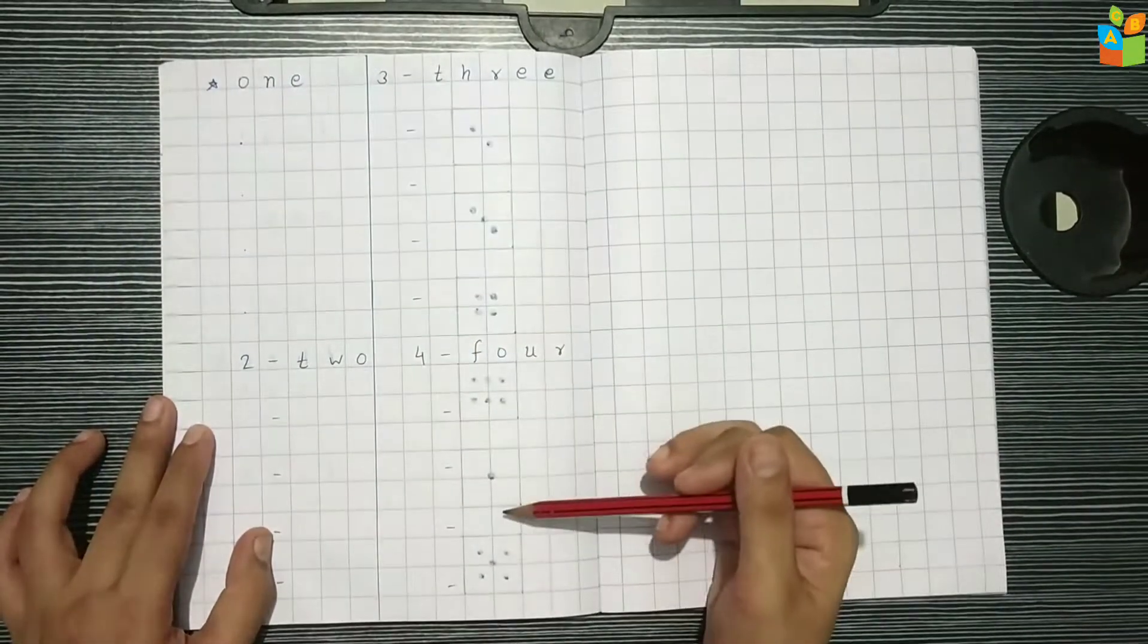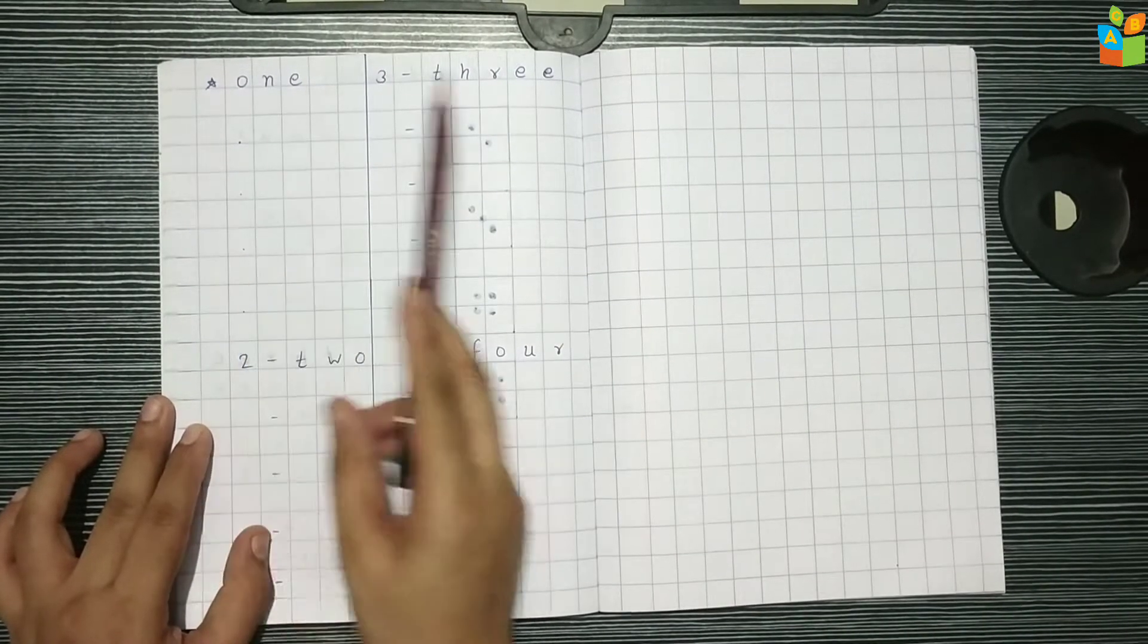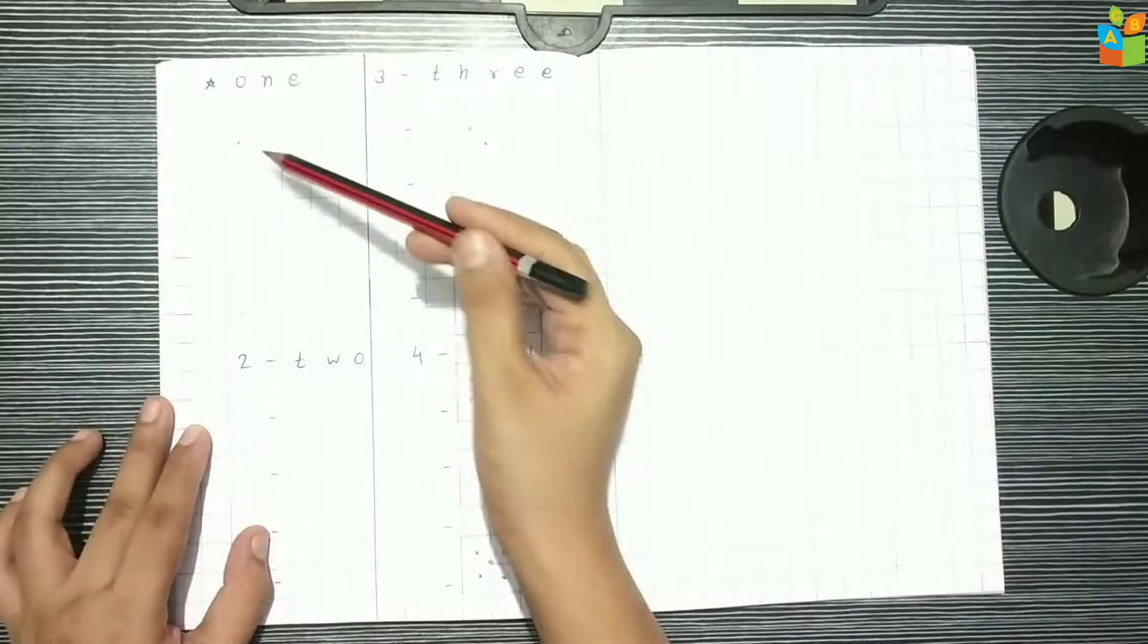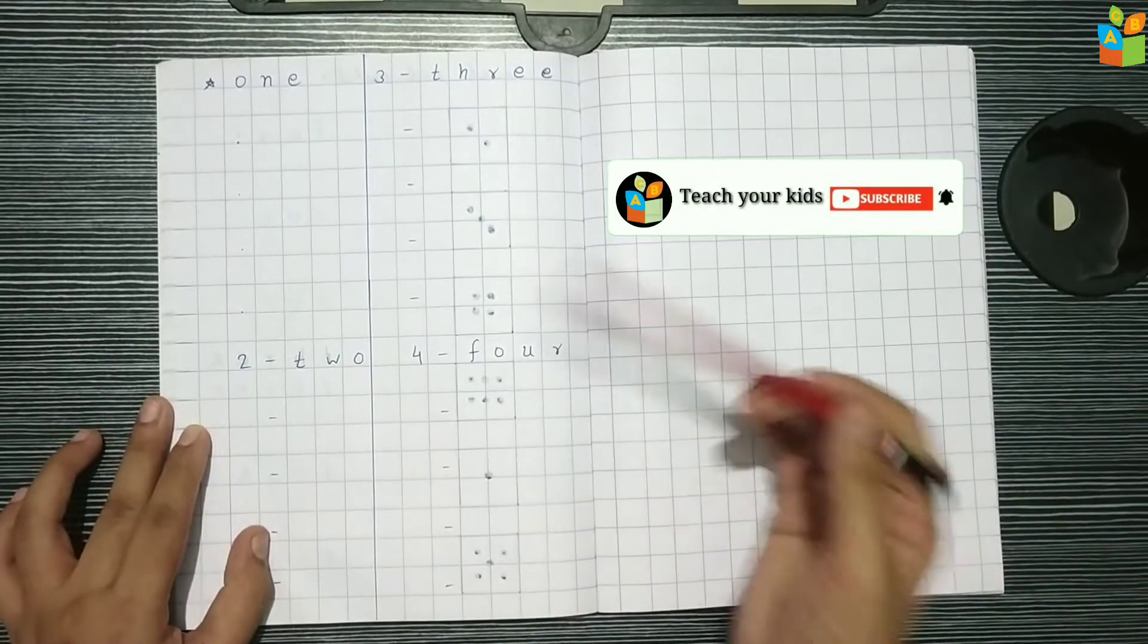Next is number name worksheet. I have written here like 1, 2, 3 and 4. I have given space here.